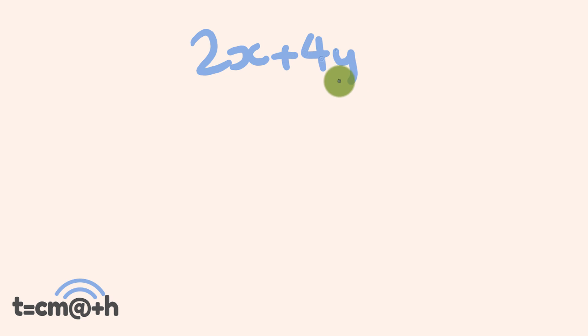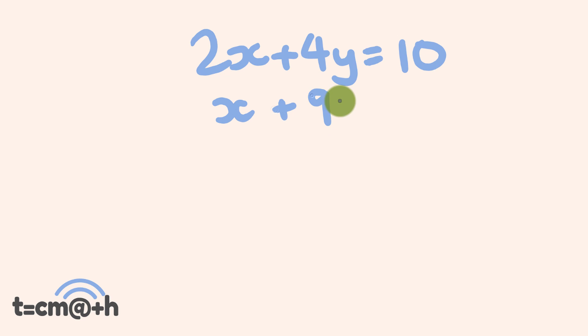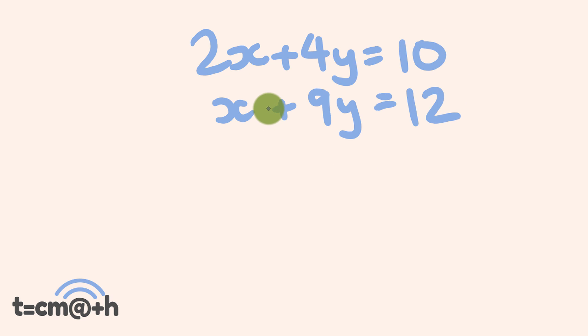I'm going to start out by putting some simultaneous equations up. So we'll start out with 2x plus 4y and this is going to equal 10. That's our first equation. Then we're going to have another equation where x plus 9y is equal to 12. So as you'll notice a couple of things with simultaneous equations — first off we have two sets of linear equations. These equations are made up of parts with letters in them — the letters are called variables. So we have the variable x in both equations and the variable y in both equations.